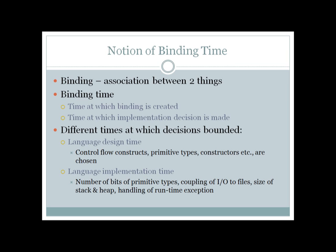Now we will see the different types of binding time. Binding is an association between two things, and the time at which a binding is created is called the binding time. The first type is language design time. Imagine you are going to create a new language like C or C++. At the time of designing the language, you decide what control flow constructs you need — if, if-else, if-else ladder, while, for, and so on.